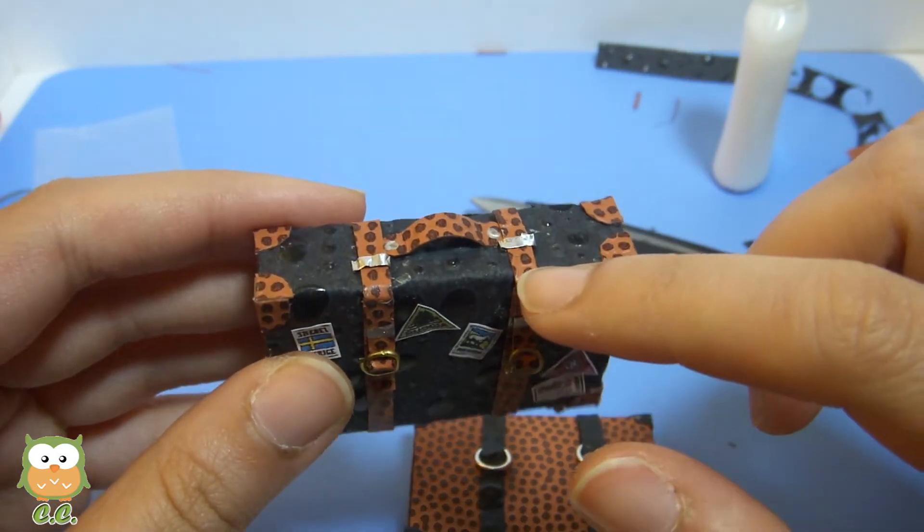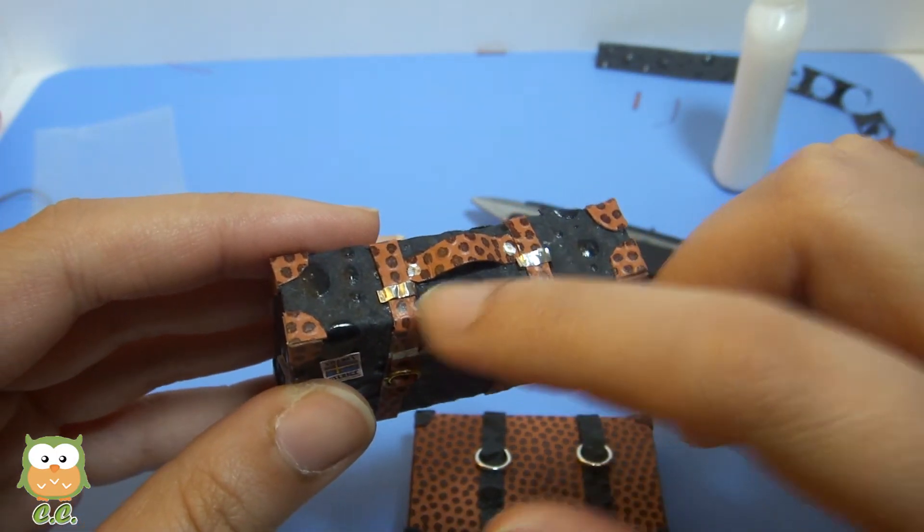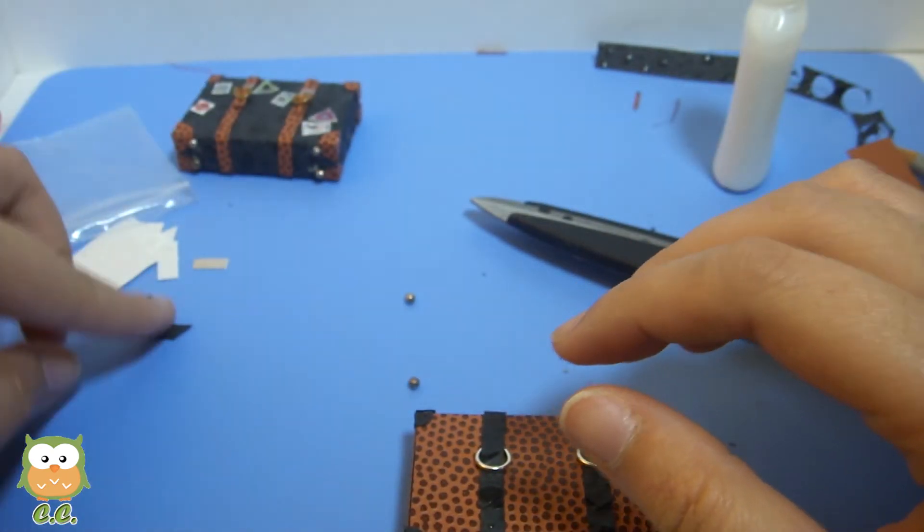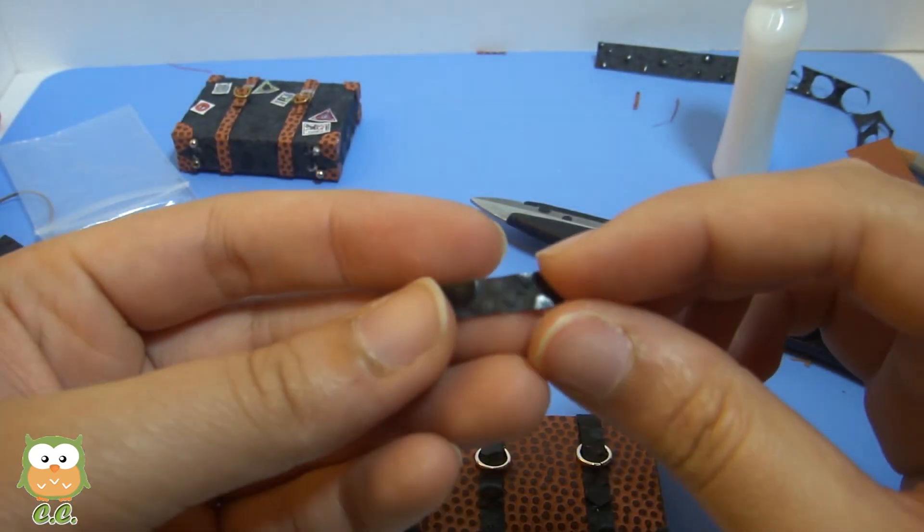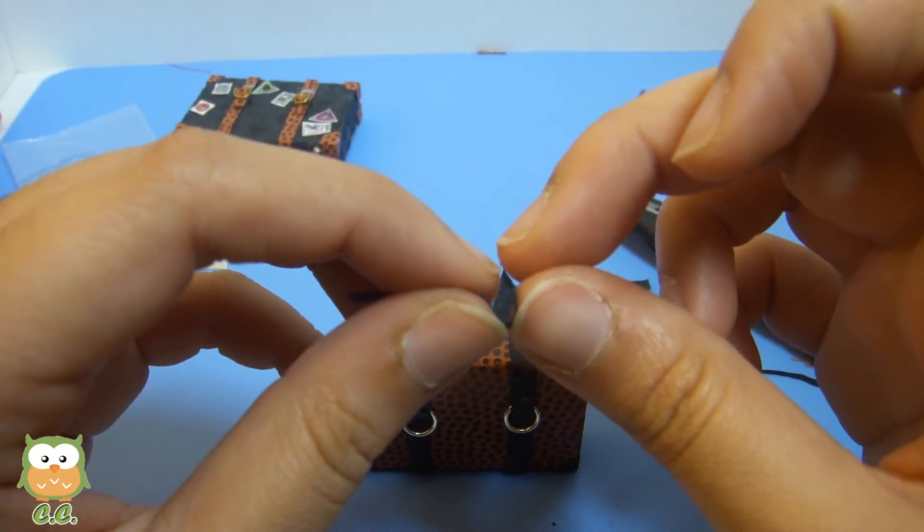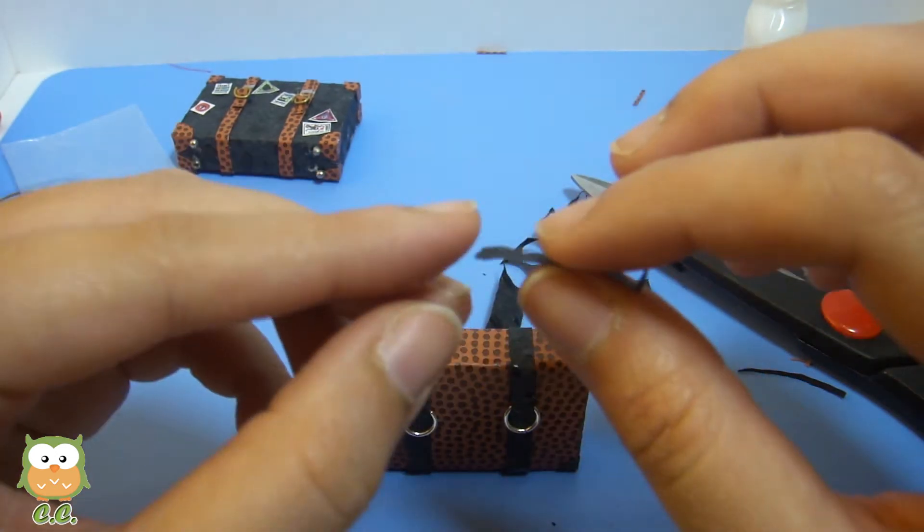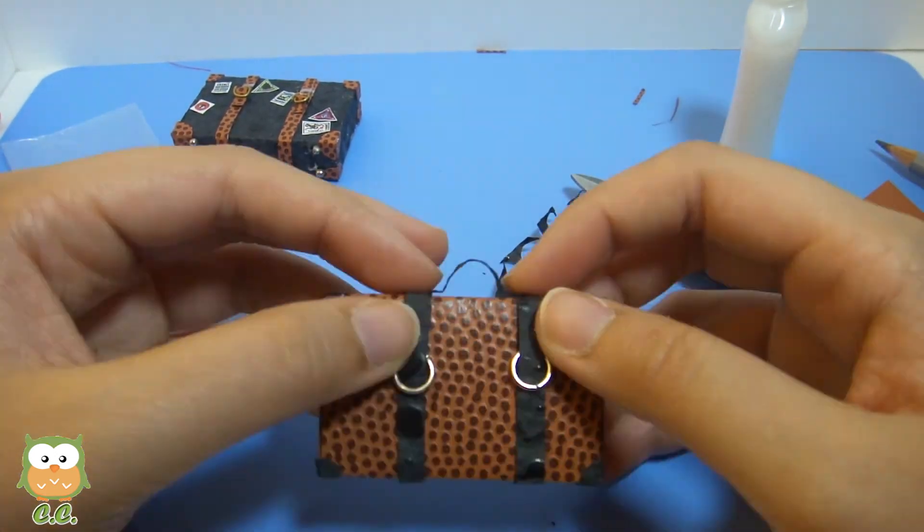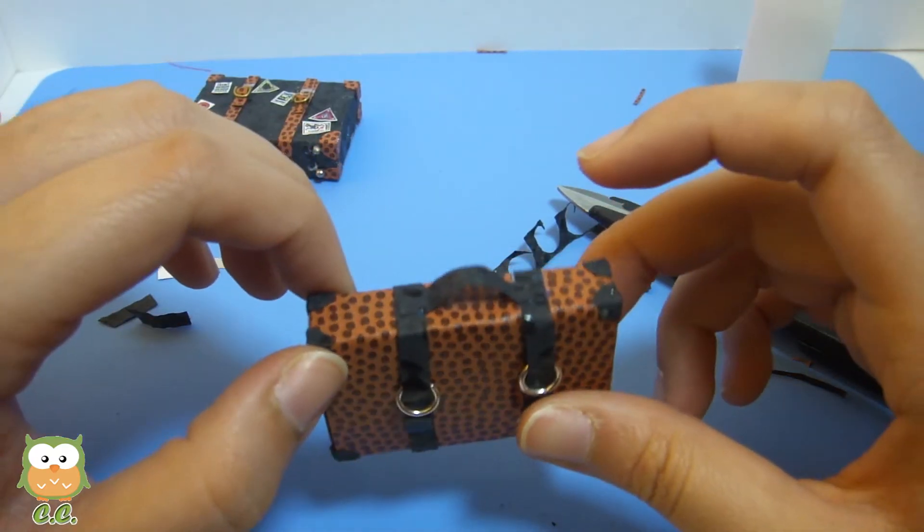The last thing is the handle and these strips. So I'm going to go ahead and use the same piece of handle that I cut off from here. So fold the end up. We'll just glue the ends on. There we have the handle.